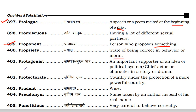Next is propriety — the state of being correct in behavior and morals. Next is protagonist. Protagonist means an important supporter of an idea or political system — or the main character in a story or drama, the hero or key figure.